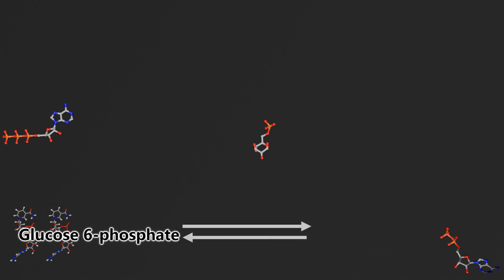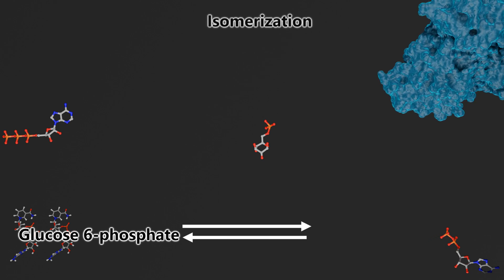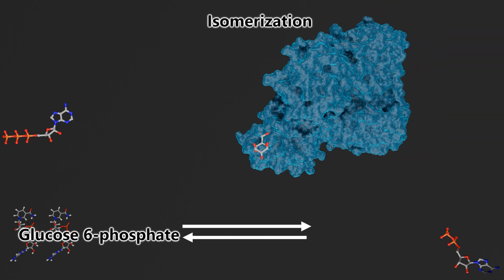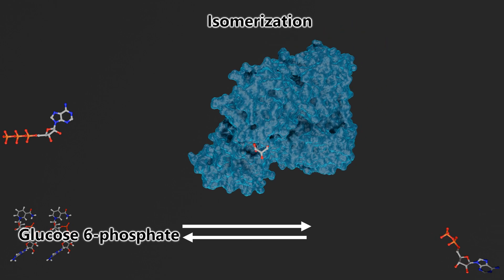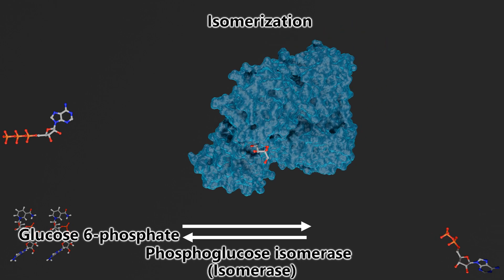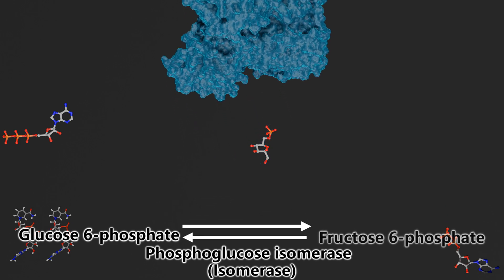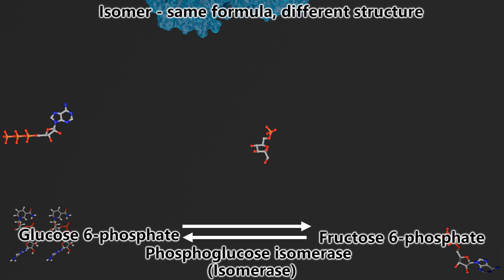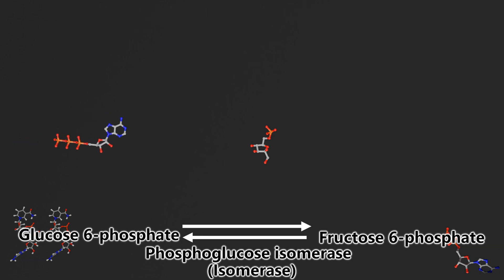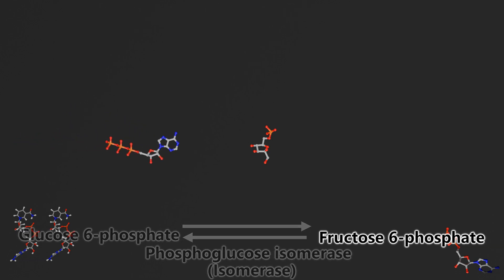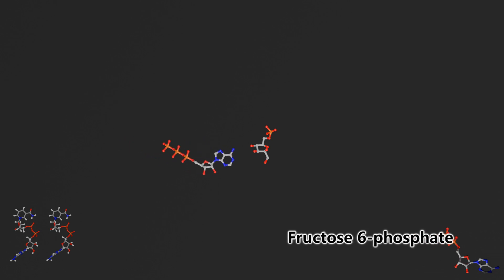In the second step, our glucose 6-phosphate is going to go through an isomerization reaction and that's going to be catalyzed by the enzyme phosphoglucoisomerase to produce fructose 6-phosphate. Remember, an isomer is a molecule that's got the same chemical formula but a different structure, and so fructose 6-phosphate is an isomer of glucose 6-phosphate.